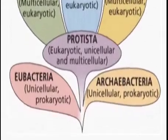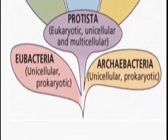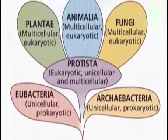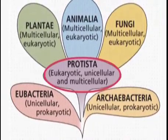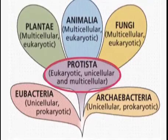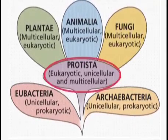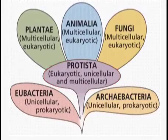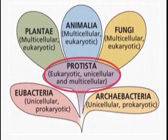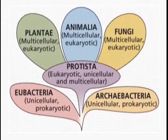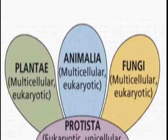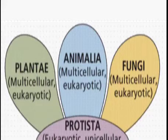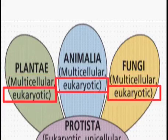The Monerans were the first organisms that came on this Earth. These are prokaryotic unicellular organisms, whereas all others are eukaryotic. Protista are unicellular but eukaryotic — that is, the cell organelles are defined and are enclosed by a membrane. Plantae, Animalia, and Fungi, on the other hand, are all multicellular organisms and are eukaryotes.